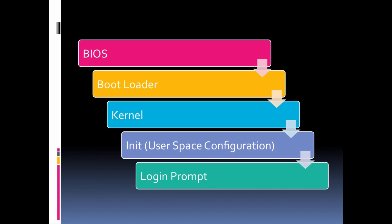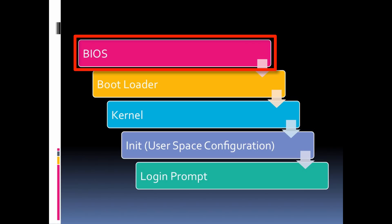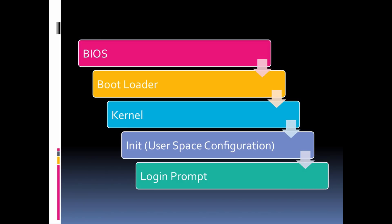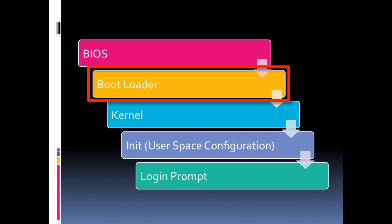Let's talk about the general overview of this entire process. You press the power button on your computer. At that point, your computer's BIOS is going to go through a hardware check to make sure everything is okay. Next, it's going to launch a small piece of software called the bootloader, which is located in a special location on your computer's hard disk.